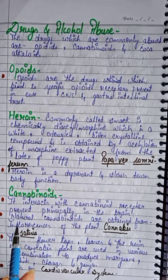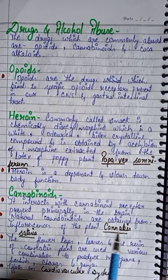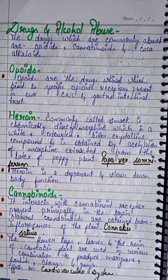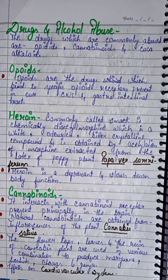Next are cannabinoids. Cannabinoids interact with cannabinoid receptors present principally in the brain — they go and bind with that receptor. Natural cannabinoids are obtained from the inflorescence of the plant Cannabis sativa, meaning they are found in the flowers of the plant.